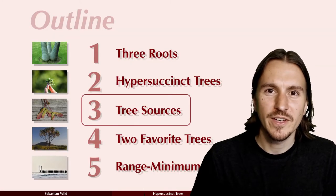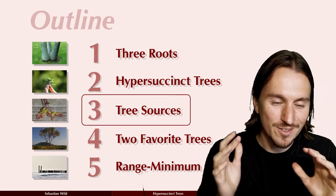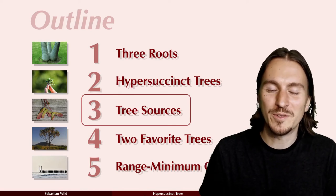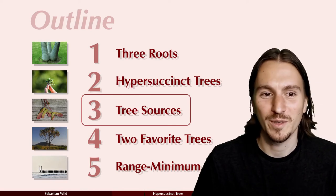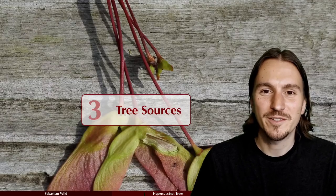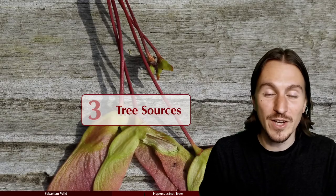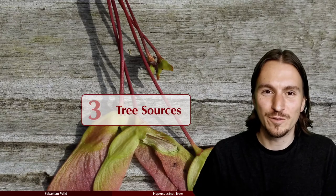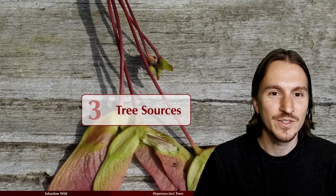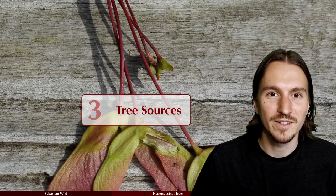The data structure side of this paper is not very heavy. We take tree covering and replace the way to store the micro trees with a Huffman code. What makes the paper interesting is that this is enough to get optimal compression for a huge variety of tree distributions.